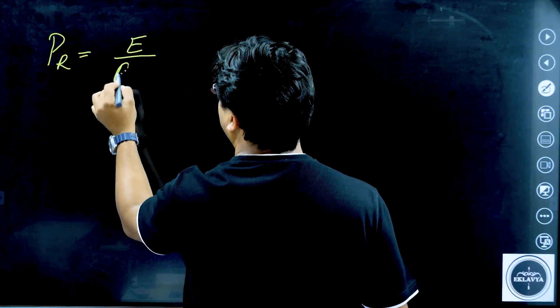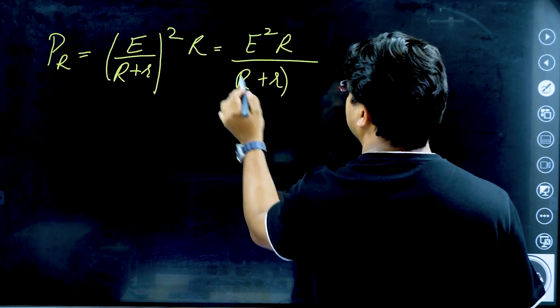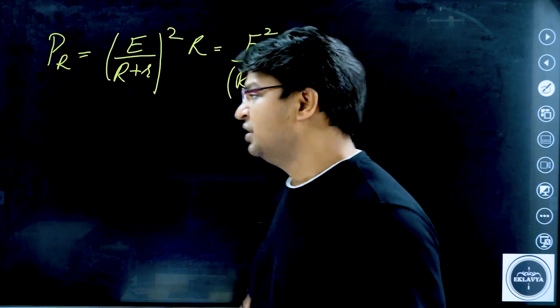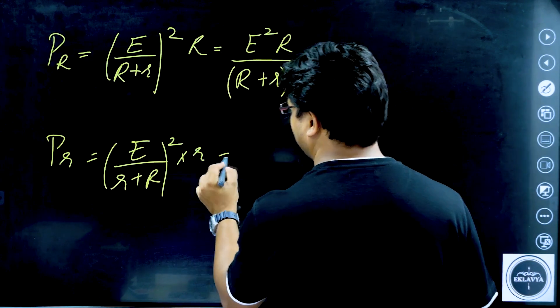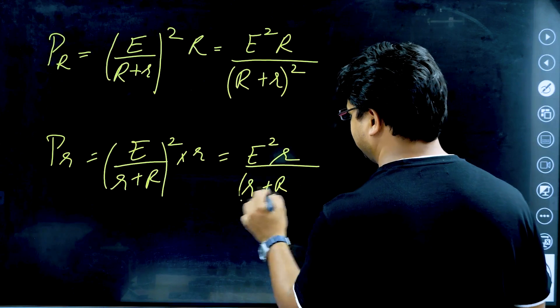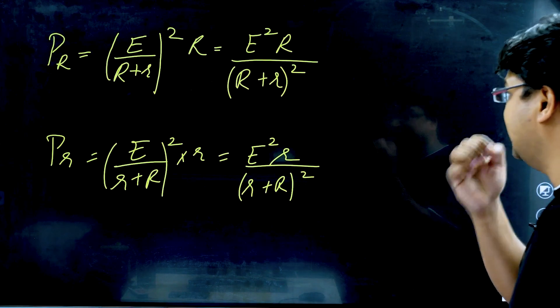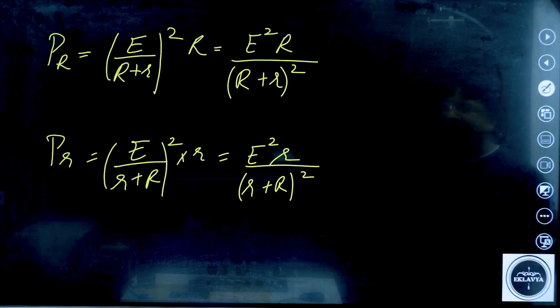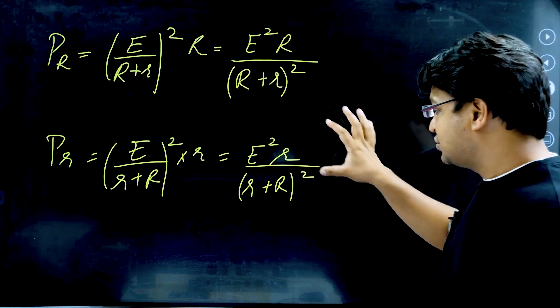Let us first write the value of P_R. It would be (E / (r + R))² × R, so capital R appears in both the numerator and the denominator, meaning a straightforward answer is not immediately obvious — we need to delve into mathematics. For P_r, it becomes (E / (r + R))² × r, and again both r and R appear in numerator and denominator.